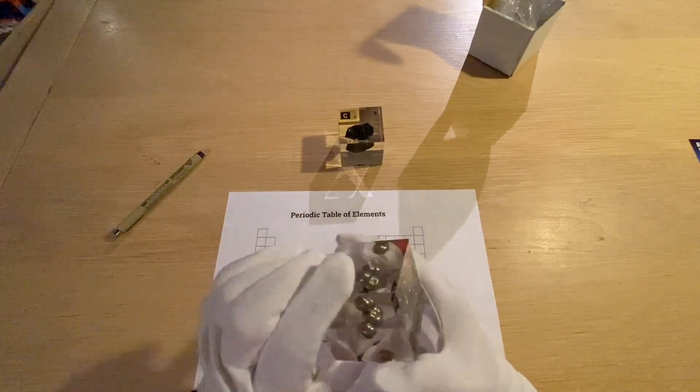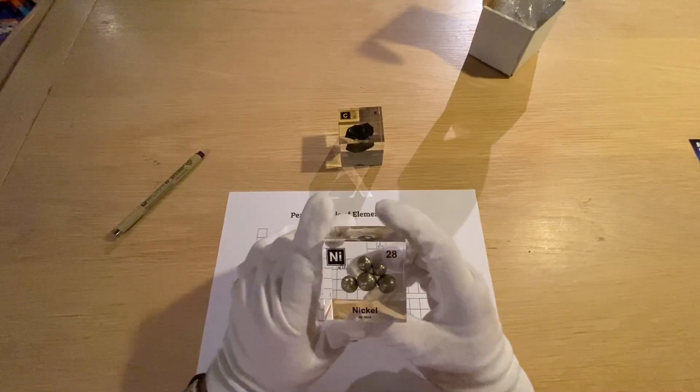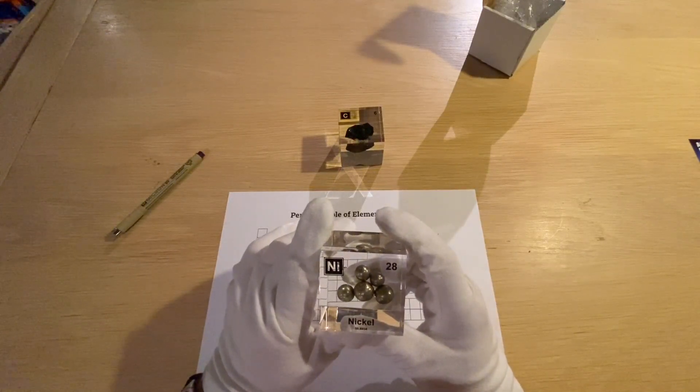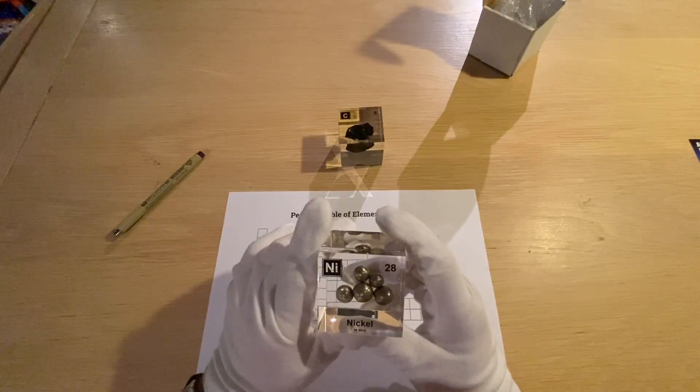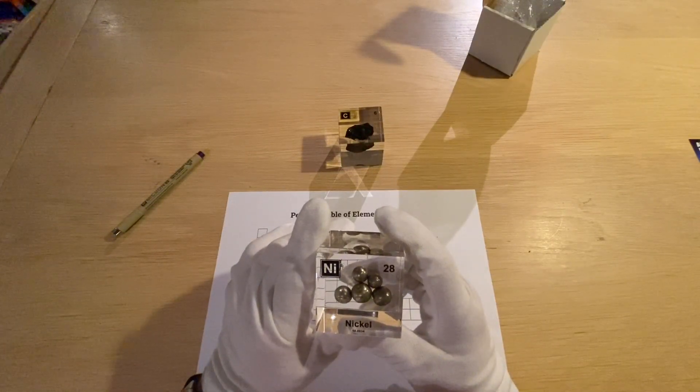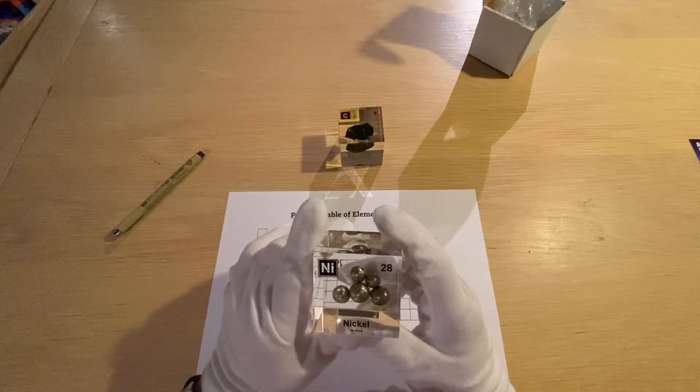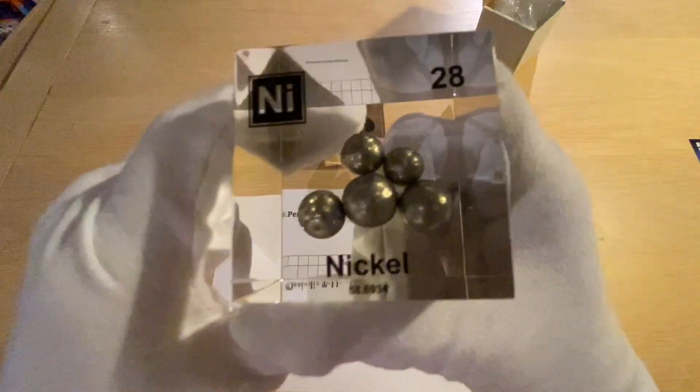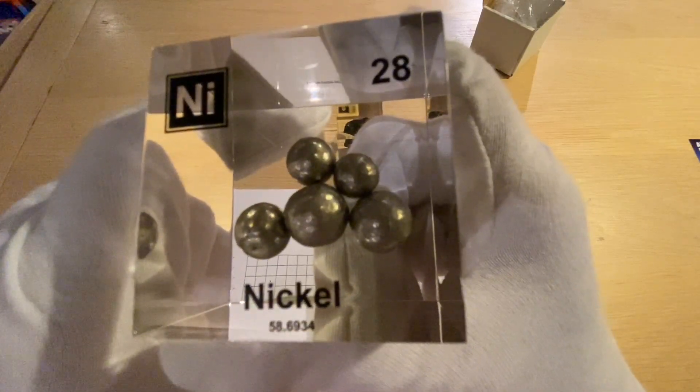Well we can say about it that it has 28 protons and therefore 28 electrons when stable. It's a solid as you can see at room temperature and it can be found in the isotopes 58, 62, and 64. So that means it will have 30, 34, or 36 neutrons. Its mass number as we just written down is therefore 58.6934.